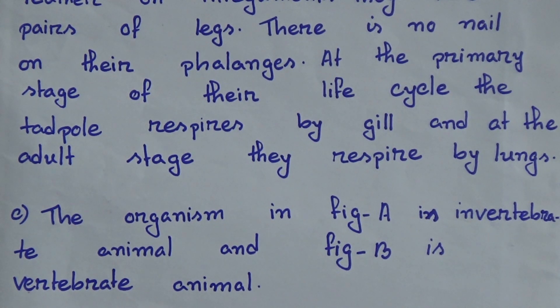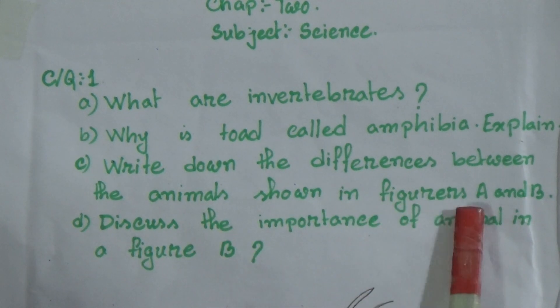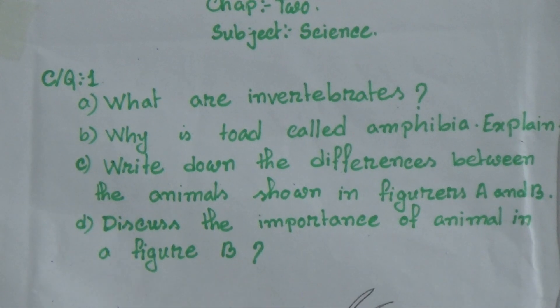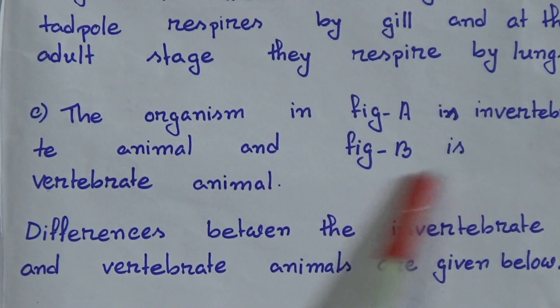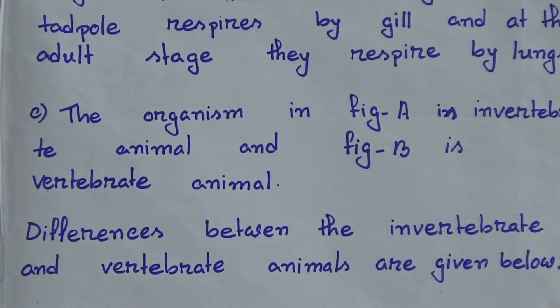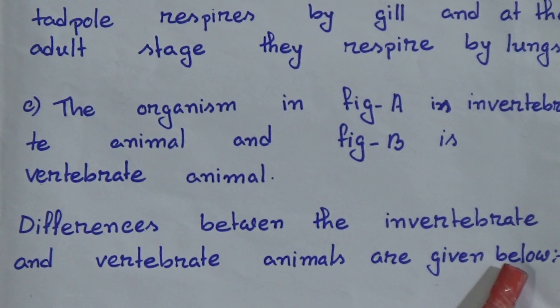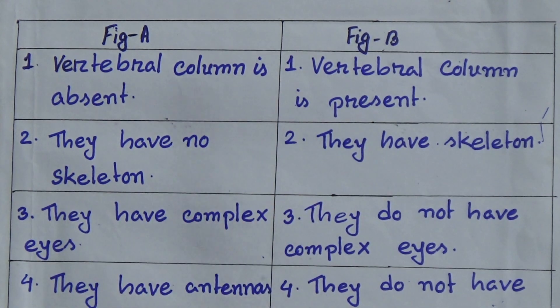Now we will discuss Question C: Write down the differences between the animals shown in figure A and figure B. Here are two figures of fish. The organism in figure A is an invertebrate animal and figure B is a vertebrate animal. The differences between invertebrate and vertebrate animals are given below in a chart.